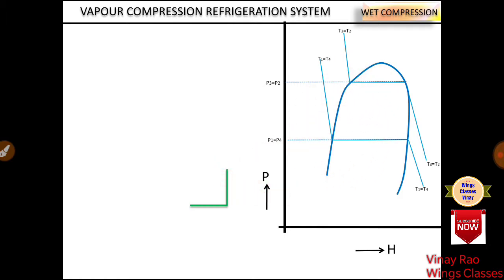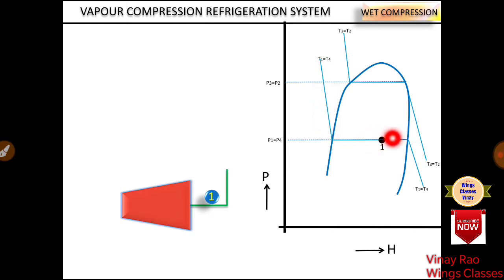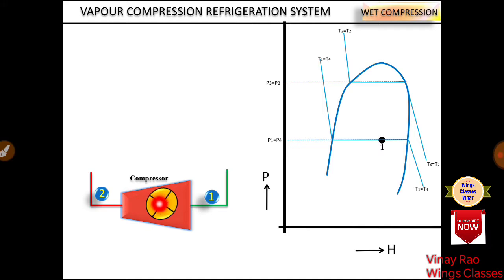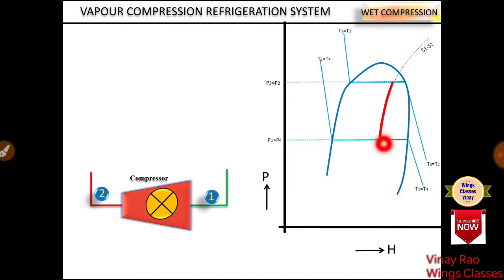At point number 1, pressure is P1 and temperature is T1 along a constant temperature line. From 1 to 2 there is a compressor working on an isentropic process, meaning entropy is constant. In the P-H chart, entropy lines appear as inclined curved lines. From 1 to 2 we follow the isentropic line where S1 equals S2, giving us point number 2 at a higher pressure.